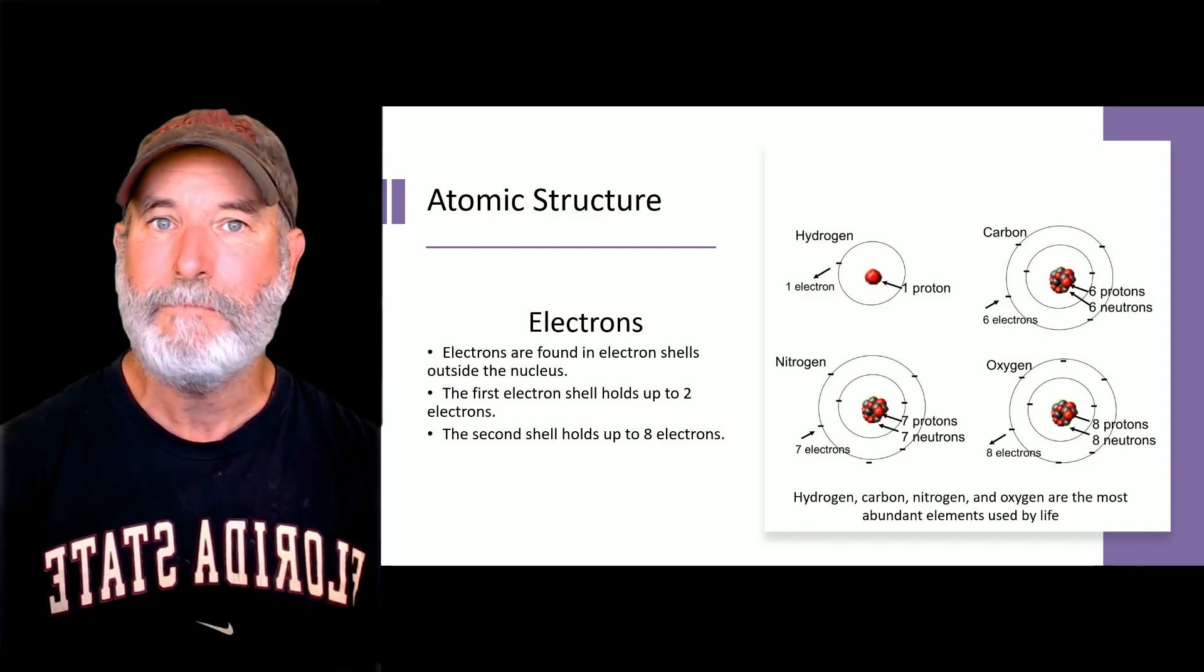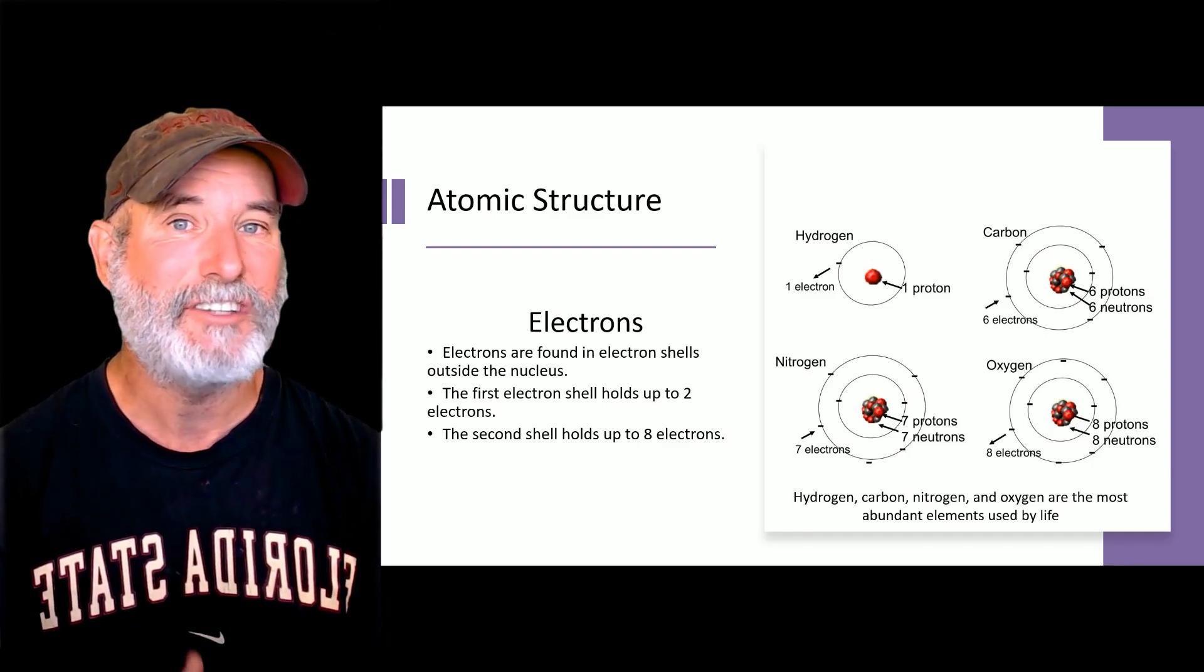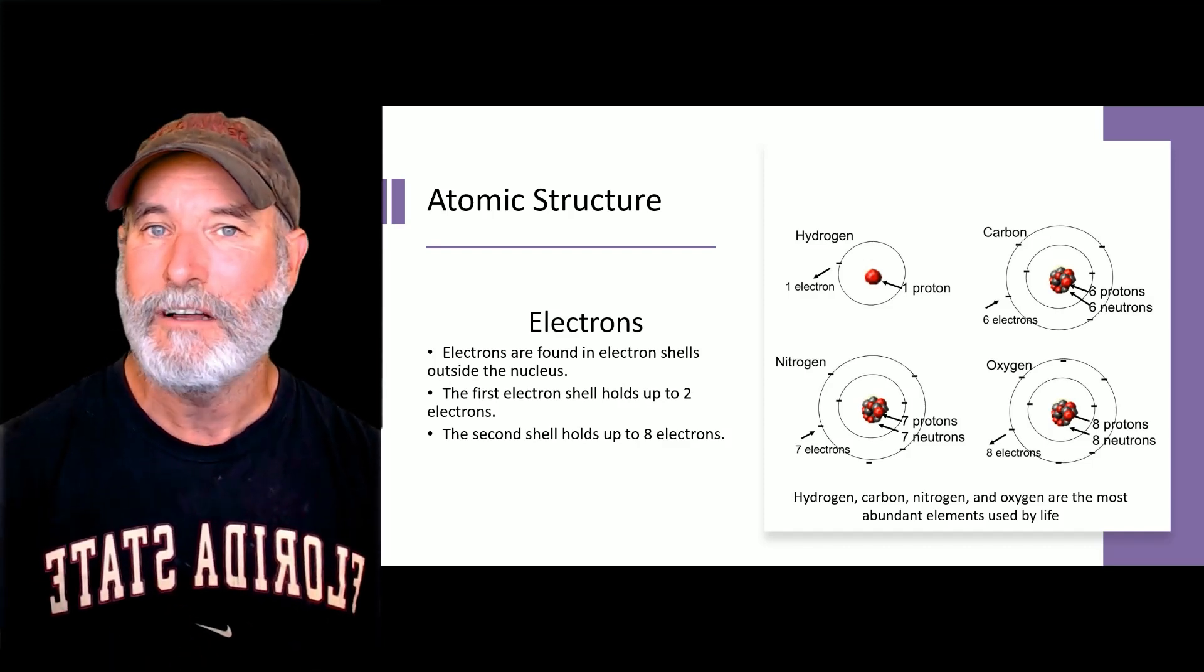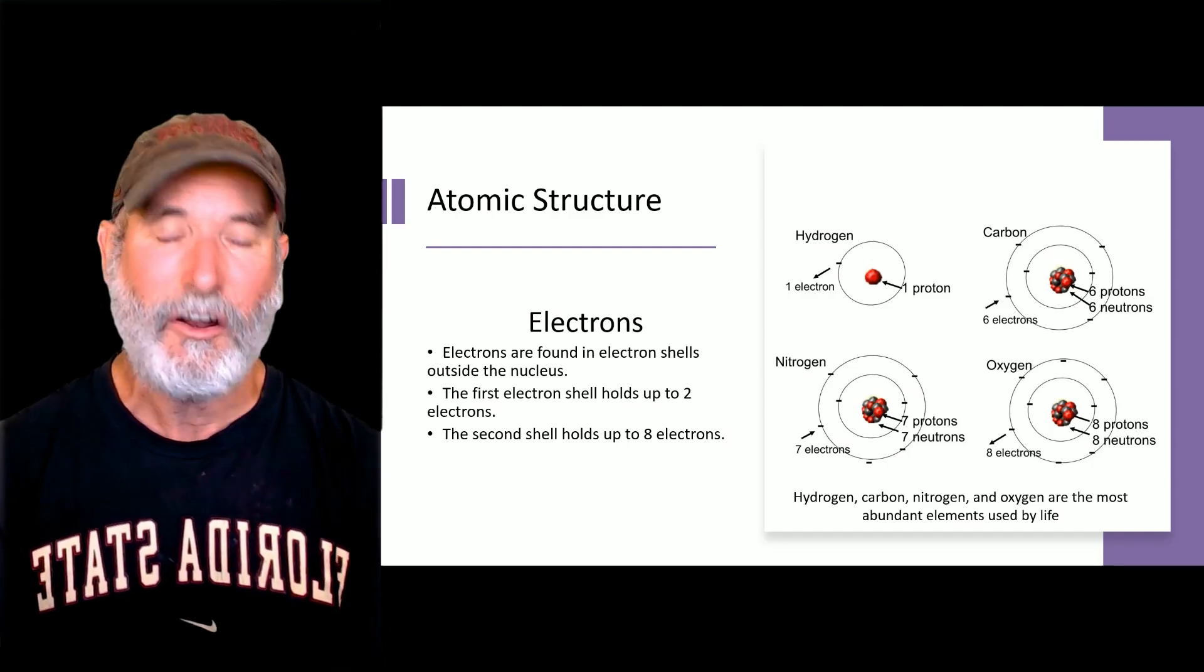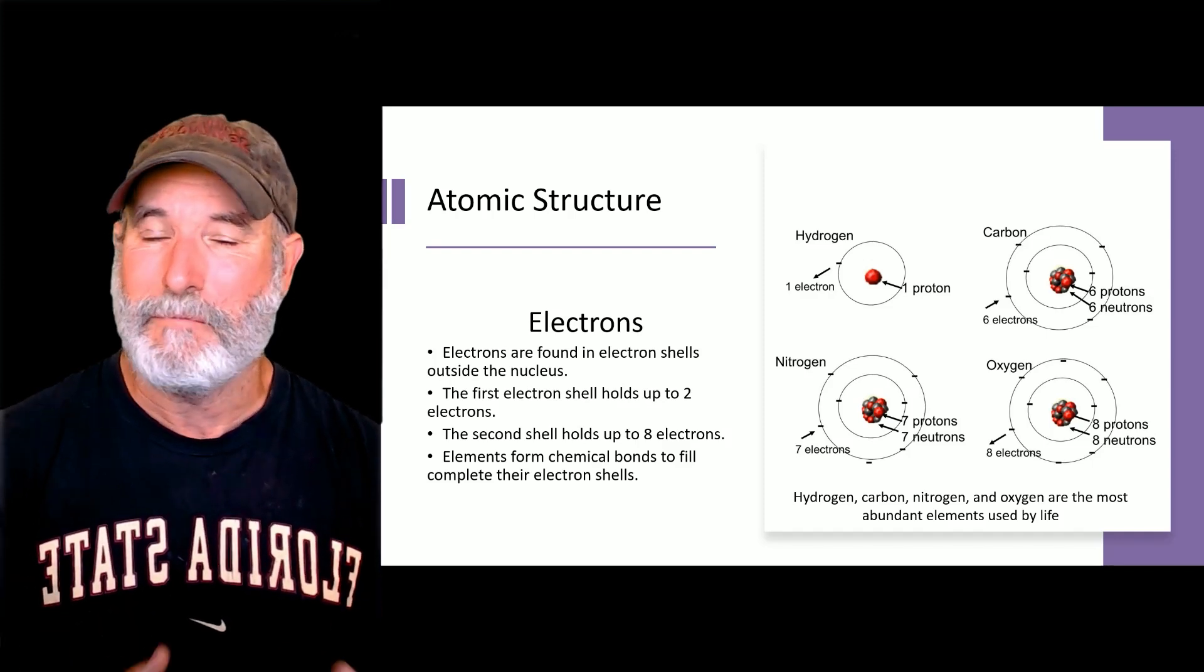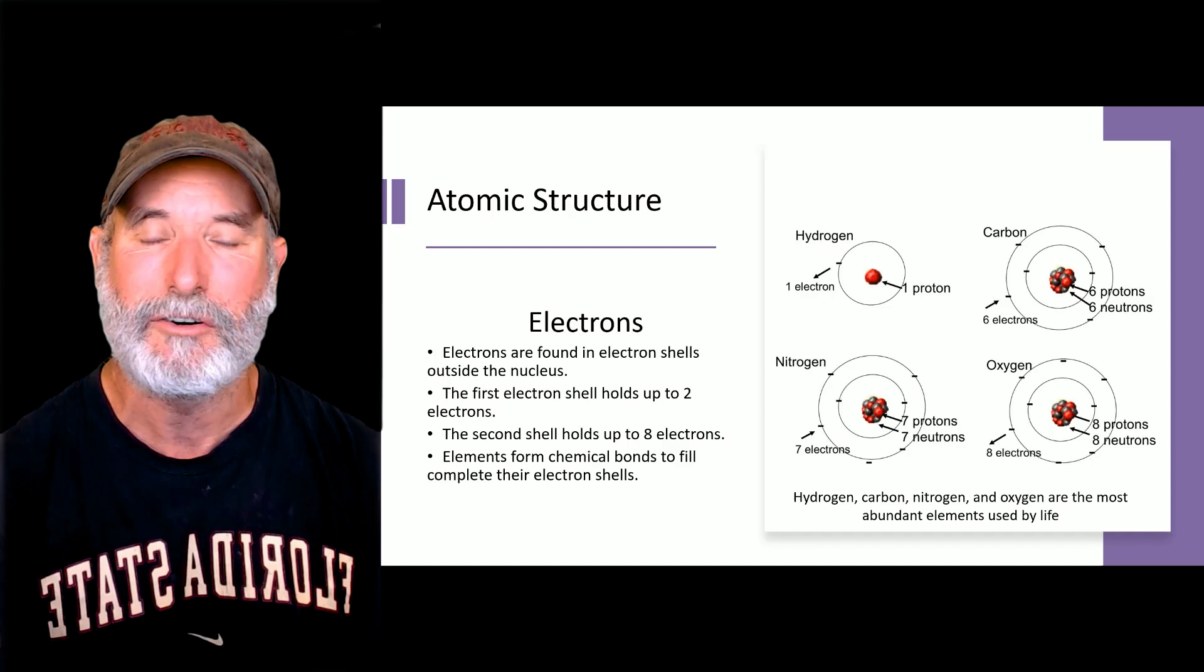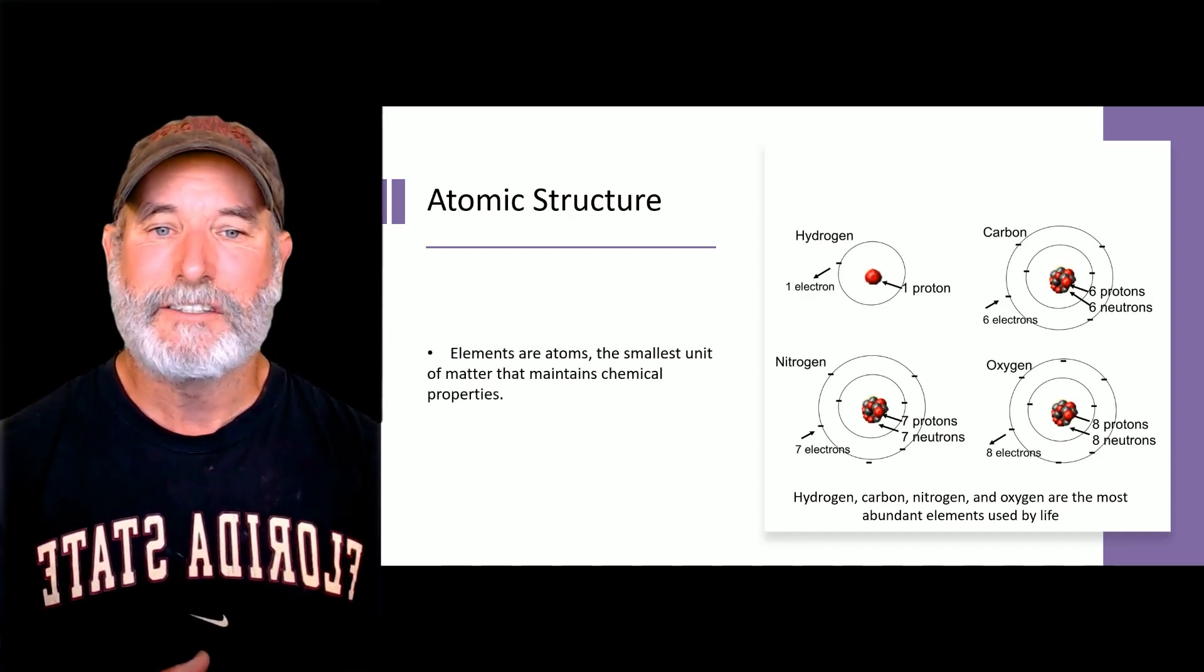Now, when the shells are full, that element is chemically stable. And that's important, right? So, if you don't have a full shell, then you will either acquire electrons or share electrons to become chemically stable. And that's the basis of how we get bonding, which creates molecules. So, these chemical bonds complete these electron shells, so they'll be stable.